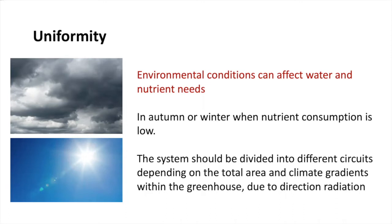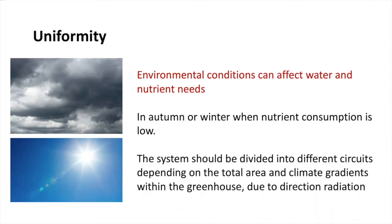We know that depending on environmental conditions, plants will change their requirements for water. If we have cloudy days or sunny days, during winter or during summer, the requirements of water in the plant will be different. So depending on environmental conditions, the requirements of water on the plant can change, and of course we need to consider this in order to calculate the capacity of the system. But this can also affect another very important characteristic when working with irrigation systems: uniformity.